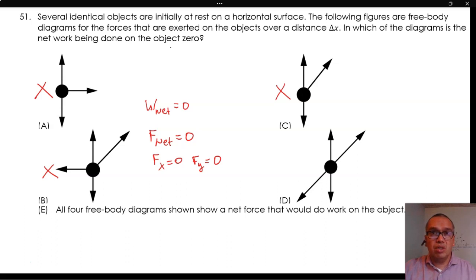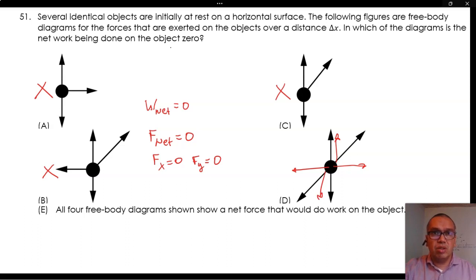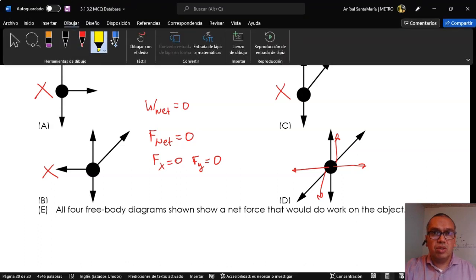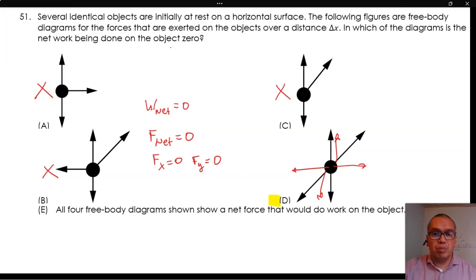In the case of option D, all horizontal components cancel out, all vertical components cancel out, and the net force is zero. In that case, the resultant work will be zero, so this is our correct option.